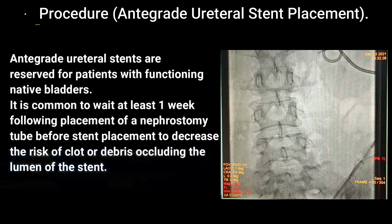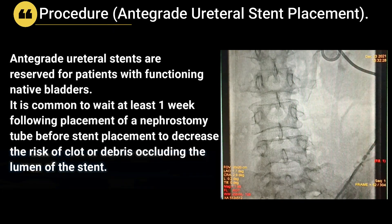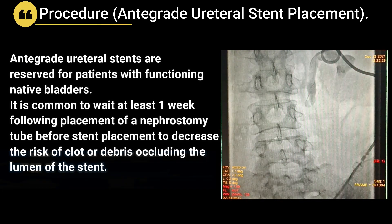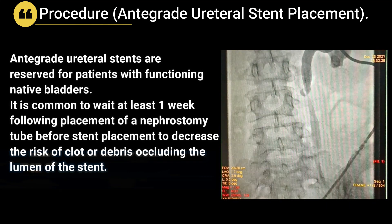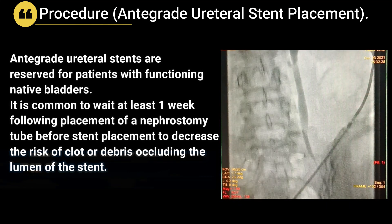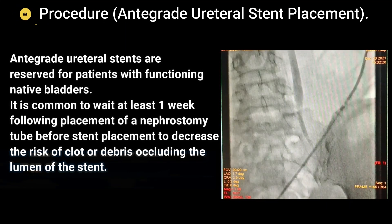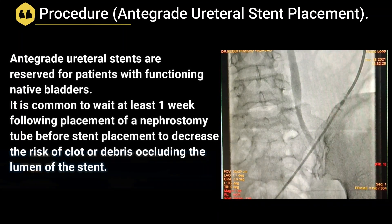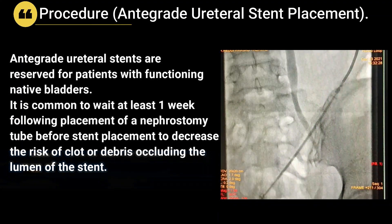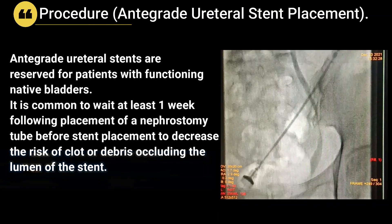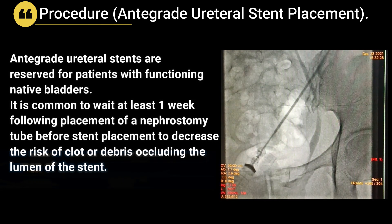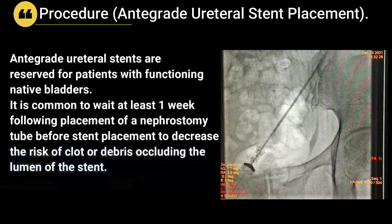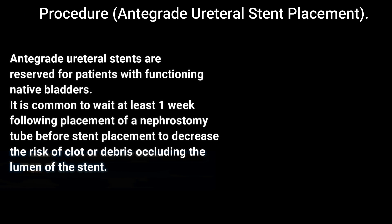Now let's move on to the procedure of antegrade ureteral stent placement, and see how it is done in the interventional areas. Antegrade ureteral stents are reserved for patients with functioning native bladders. It is common to wait at least one week following placement of a nephrostomy tube before stent placement, to decrease the risk of clot or debris occluding the lumen of the stent.